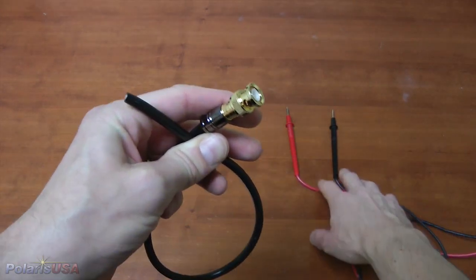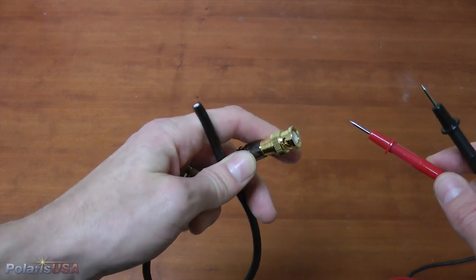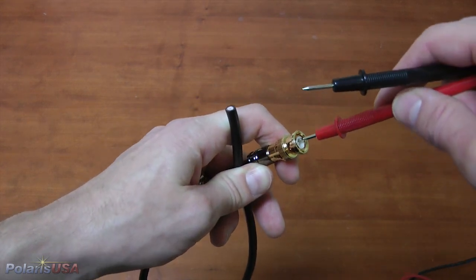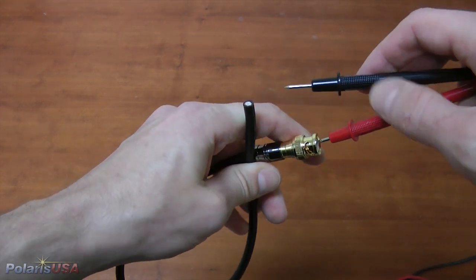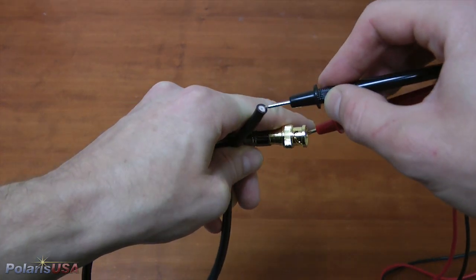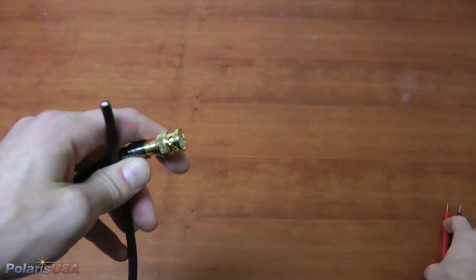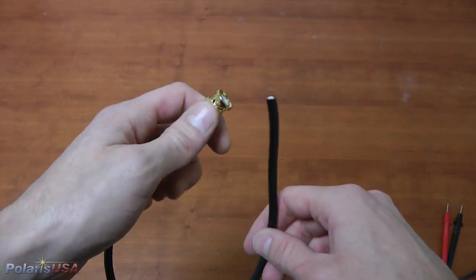This is a good time to use our continuity tester to verify that we have the cable inserted properly before compressing, which is not reversible. To do so, I am going to verify connectivity between center post and center post. Now that we have verified center post conductivity, I will compress the connector.